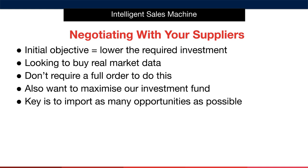When we first launch a product we simply don't require a full order of products. We must create a balance between ordering below MOQ while at the same time ordering enough units to determine the exact quantity of units that our items will sell over a defined period of time. We also want to maximize our investment fund by ordering as many opportunities as possible, while tempering this with how aggressive we want to be in our investment strategy. I have some very simple rules that will help you make the best decisions possible and maximize your investment capital while staying as de-risked as possible.